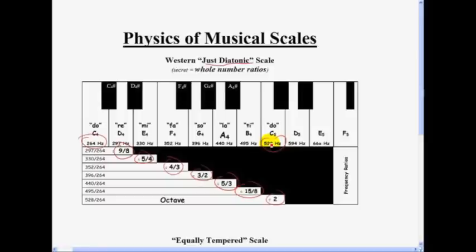How do we go from Do to Re, Mi, Fa, Sol, La, Ti, Do? How do we get all those other notes? And the way you do that, using the just diatonic scales, you're going to multiply by these magic numbers.